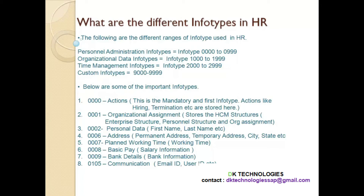The second one is info type 0001, whose name is Organizational Assignment. This info type stores the enterprise structure, personal structure, and organizational plan. As discussed in previous lectures, we talked about enterprise structure, personal structure, and organizational structure — those three structures will be stored in info type 1, which is Organizational Assignment.